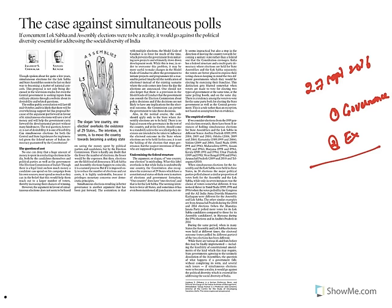Simultaneous elections are a possibility, but the voting behaviour of citizens gets influenced because of them. From 1984 to 2014, 31 times simultaneous elections were held, and in more than 24 of those instances a single party won both elections. This statistical correlation does not occur when elections are held separately for Lok Sabha and legislative assemblies, meaning simultaneous elections are influencing the voting behaviour of voters.